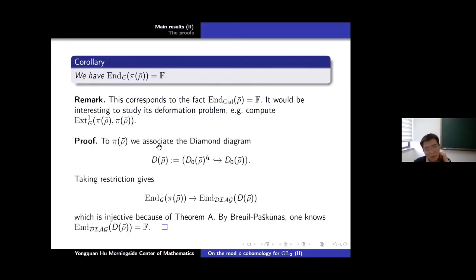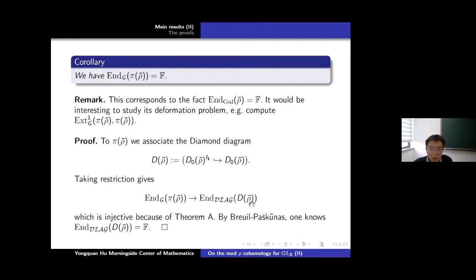Let me explain briefly the proof. To π(ρ̄), we can associate the diamond diagram: take the K1-invariants and I1-invariants, which form a diagram. You take a restriction and get a morphism of rings from the endomorphism ring of π(ρ̄) to the endomorphism ring of D(ρ̄) — here the endomorphism is as diagrams.